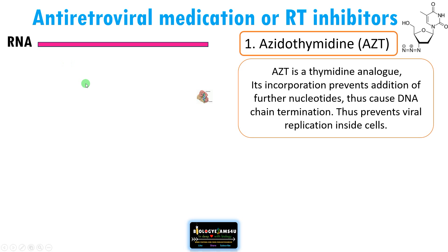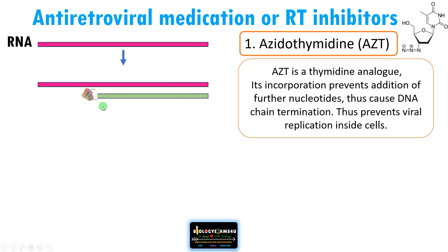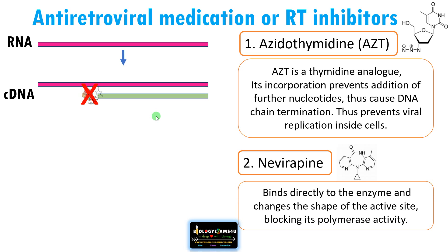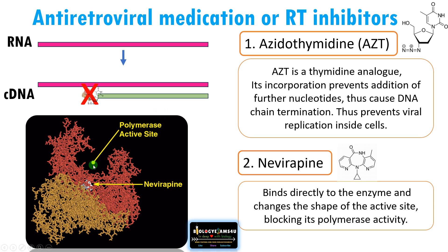So this is the RNA. Reverse transcriptase will form DNA using this RNA template. This drug is a thymidine analog — whenever this analog is added to the growing chain, chain termination occurs. Thus short or partial chains are formed, blocking viral replication. The second drug is Nevirapine. This drug binds directly to the enzyme and changes its conformation, altering its active site and blocking its polymerase activity. Nevirapine is close to the polymerase activity site and alters the binding of DNA and RNA to this active site, so reverse transcriptase loses its polymerase activity and is no longer functional.